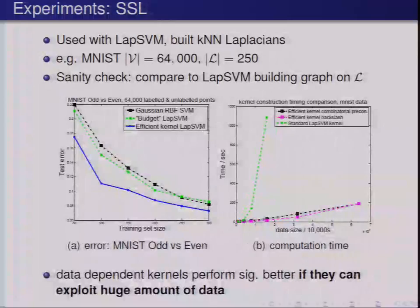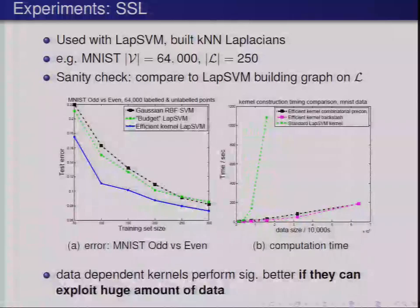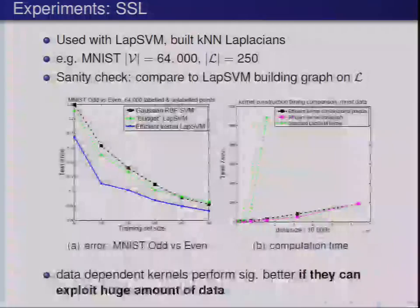In terms of complexity: once you have your regularizer Q on the whole vertex set V, this shows the complexity of computing the kernel. The original construction of Sindhwani et al. is obviously cubic and gets very difficult past around 20,000 points. The two other lines show two different ways to calculate the linear systems, and these are essentially linear in practice.